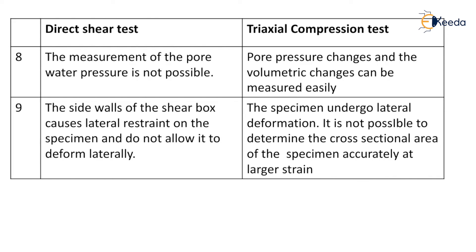Whereas in triaxial compression test, the specimen undergoes lateral deformation. It is not possible to determine the cross-sectional area of the specimen accurately at larger strain. That means in triaxial compression test, when we apply pressure, the thickness of the sample decreases as well as its cross-sectional area increases. It can be approximately measured at lower strain, but at larger strain it cannot be measured accurately.